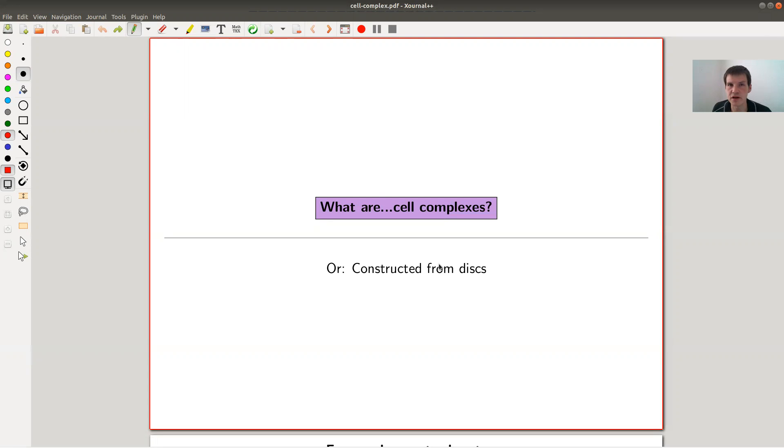Okay, welcome everyone to my continuation of what is algebraic topology. Today's topic is cell complexes, or rather how you can construct certain nice topological spaces using disks, using cells. Disks and cells will be the same in this talk. I'd like to stress that these are nice topological spaces, because in the end, for those spaces, it will be relatively easy to compute the invariants we're interested in from algebraic topology.